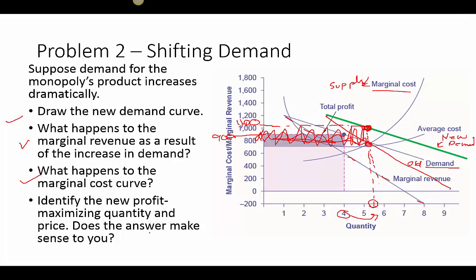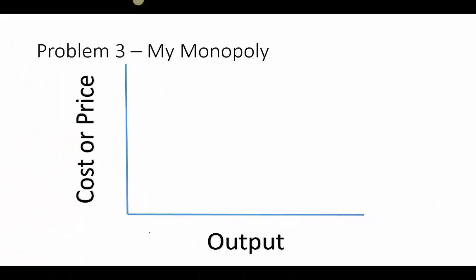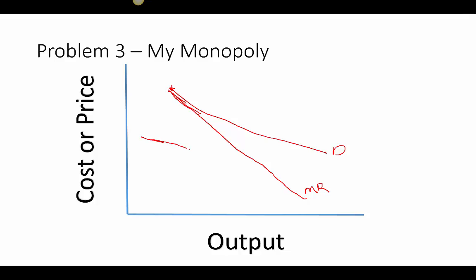Problem 3: we draw a monopolist's demand curve, then the marginal revenue and marginal cost curves, and identify the profit-maximizing output level. Demand is a downward-sloping line. Marginal revenue starts near demand and goes down as a straight line below it. Marginal cost starts high, swoops downward, then heads back up — that's the typical shape.